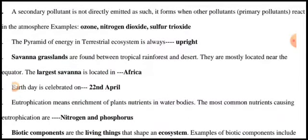A secondary pollutant is not directly emitted as such. It forms when other primary pollutants react in the atmosphere. Examples: ozone, nitrogen dioxide, sulfur trioxide.